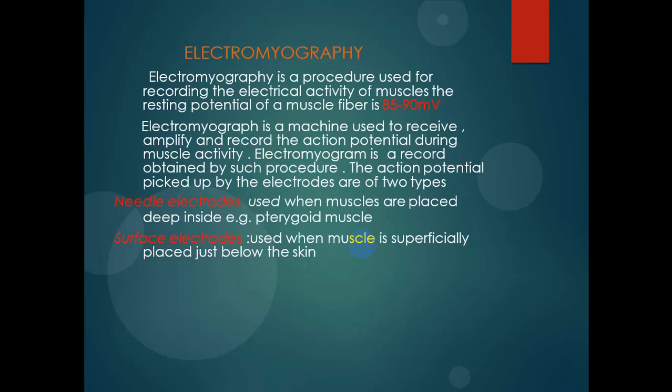Electromyograph (EMG) is a procedure used for recording the electrical activity of muscles. The resting potential of a muscle fiber is 85 to 90 mV. An electromyograph is a machine used to receive, amplify, and record the action potential during muscle activities. The electromyogram is the record obtained by this procedure. The action potentials picked up by the electrodes are of two types, corresponding to two types of electrodes.